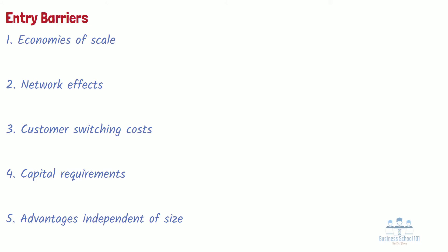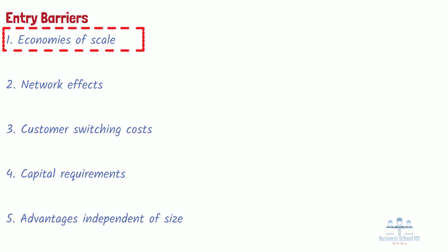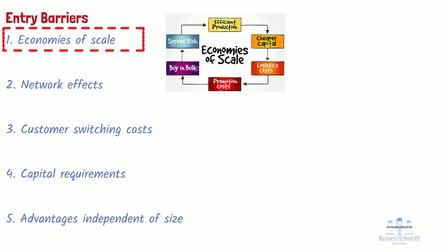Economies of scale are cost advantages that accrue to firms with larger output because they can spread fixed costs over more units, employ technology more efficiently, benefit from a more specialized division of labor, and demand better terms from their suppliers.